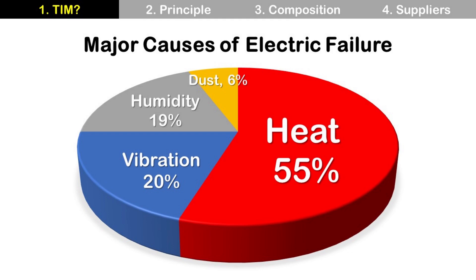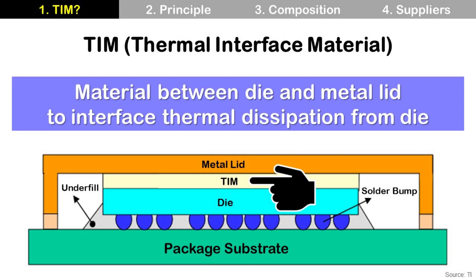TIM is the material between the die and the metal lid to interface heat dissipation from the die. And it looks like this in a semiconductor package. This kind of package is Flip-chip BGA, and its size is bigger than others — like 45mm by 45mm, 55mm by 55mm, or even bigger. The performance of this die is higher than others, meaning it generates more heat. So we need to remove this heat for normal operation of the die.